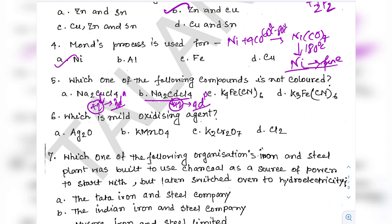Question 6: Which is a mild oxidizing agent? KMnO4 is a very strong oxidizing agent (Mn in +7 state); K2Cr2O7 has Cr in +6 — also very strong; chlorine is also very strong. But Ag2O is a moderately strong oxidizing agent. Generally, higher the oxidation number of the metal atom, higher the oxidizing power. Ag is in +1 oxidation state, so it is mild — option A is correct.